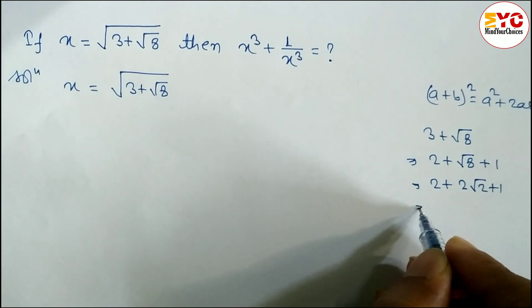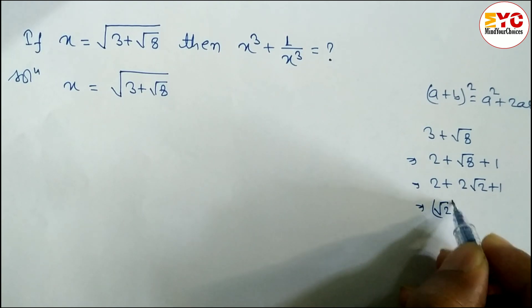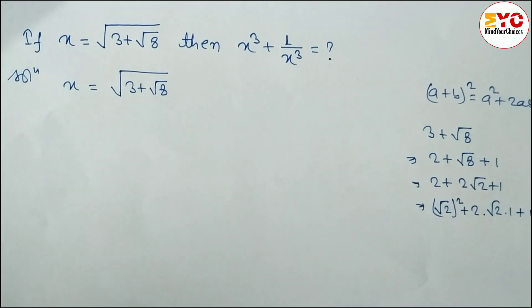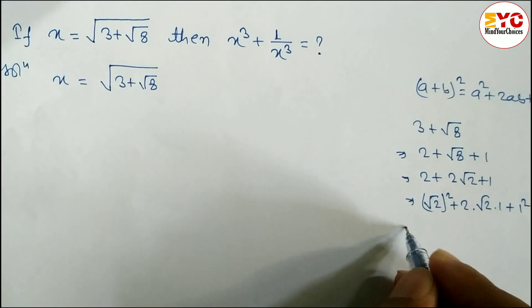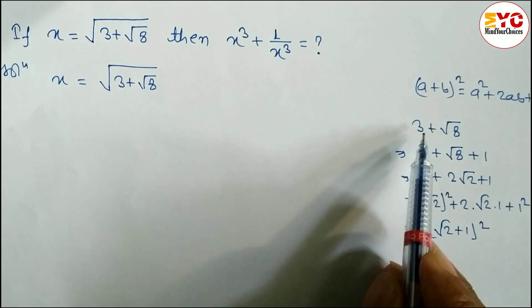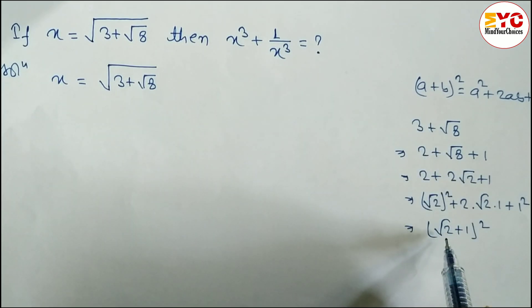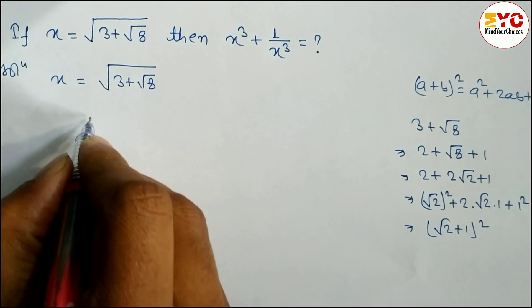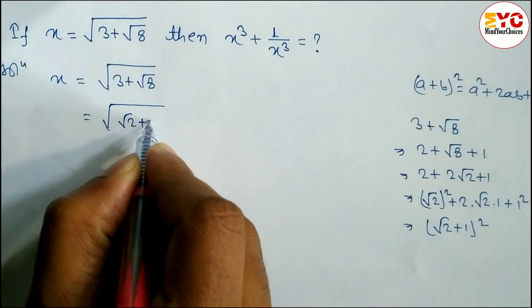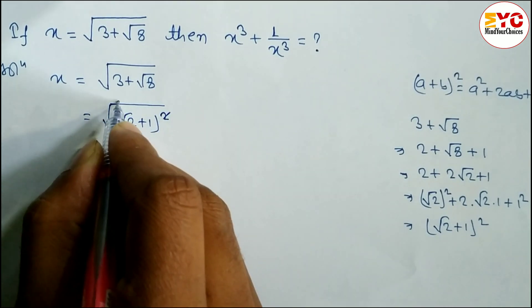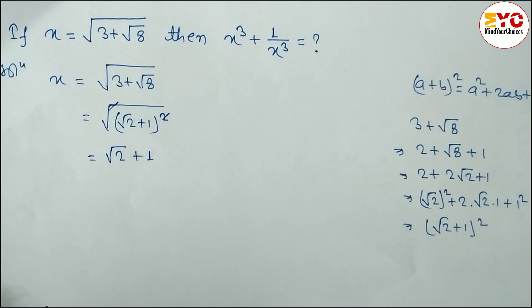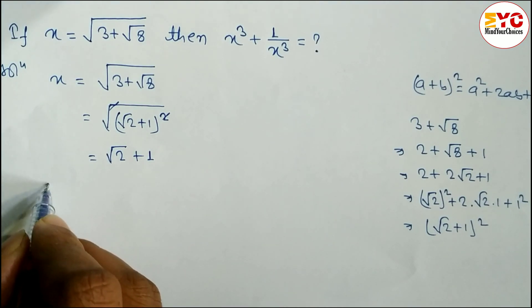Since √8 = 2√2, we can write this as 2 + 2√2 + 1. Converting to the form (a + b)², we get (√2)² + 2·√2·1 + 1², which equals (√2 + 1)². So in place of 3 + √8 we write (√2 + 1)². The square and root cancel, so the value of x is √2 + 1.